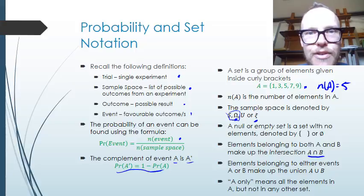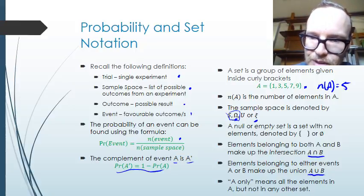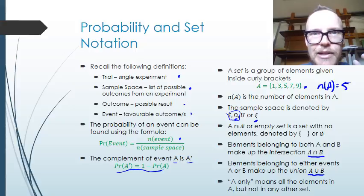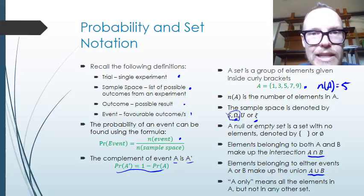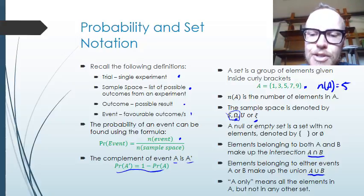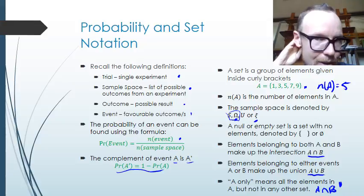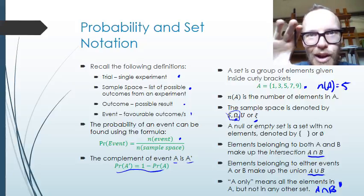If elements belong to either of the events A or B, that makes up the union A union B, which has this symbol — it's the intersection symbol but upside down, like a U or a cup — and we combine the elements from A and B into this new set A union B. 'A only' means all the elements in A but not in any other set. So that's the elements that are in A, but also not in B — the complement of B. That's the set A only: the ones that belong only to A and not to any other set.